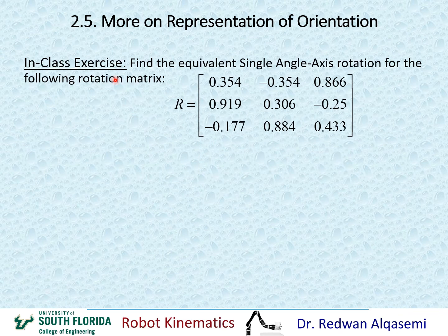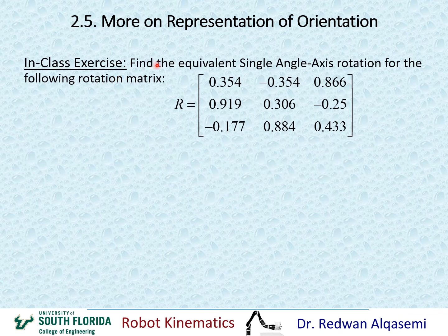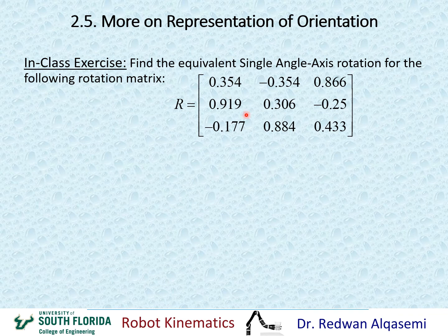Now let's take an in-class exercise: find the equivalent single angle-axis rotation for the given 3×3 rotation matrix. You need to find the single angle and the single vector defining the axis of rotation. Please pause the video, solve it on your own, then resume to check the solution.